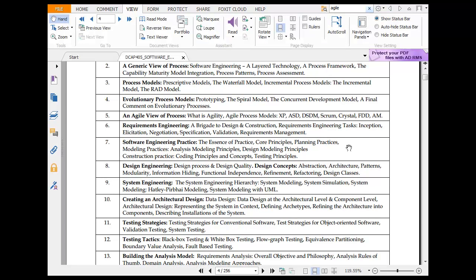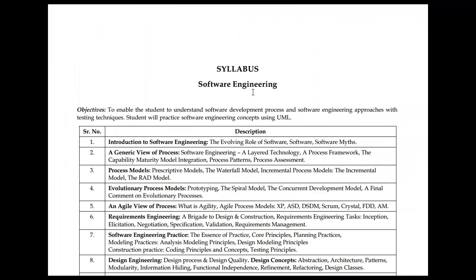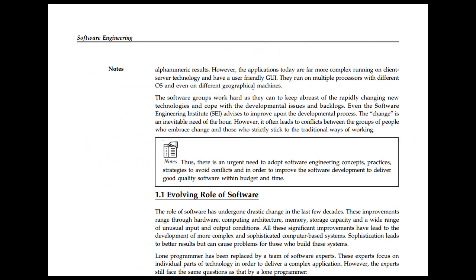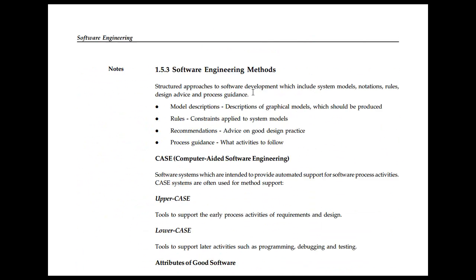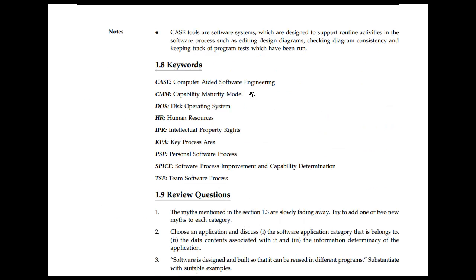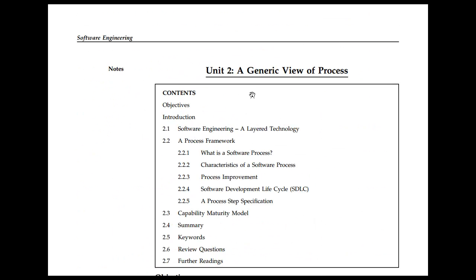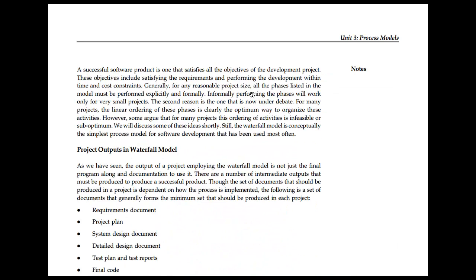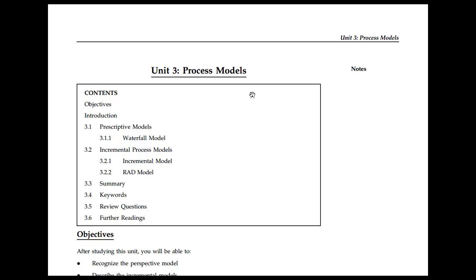I am now at the second unit here. I'm going to talk about these process models: waterfall model, incremental model, which is unit 3. Quickly going to look at that process model. Now the whole idea here is to look at the vocab that they're using because that becomes interesting and that would make it easier to understand. Having a broad level idea always helps here.